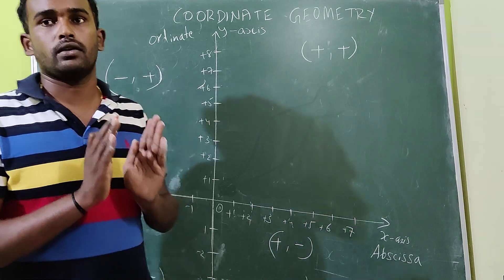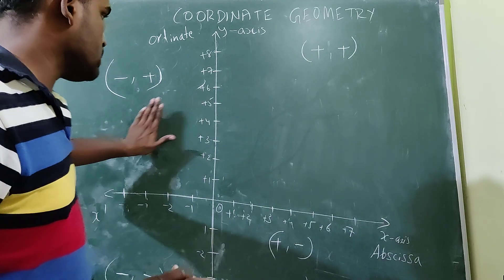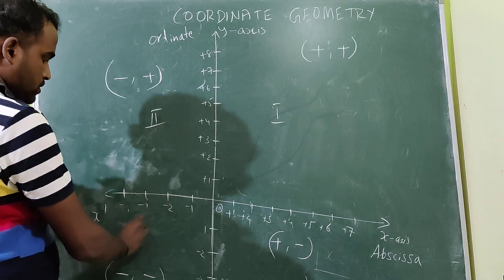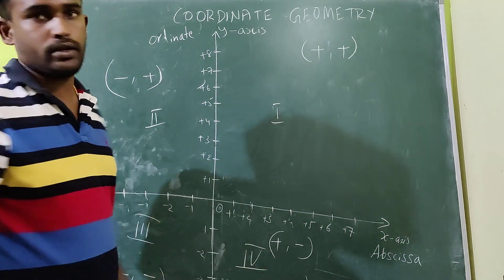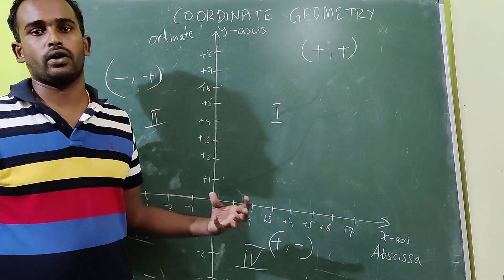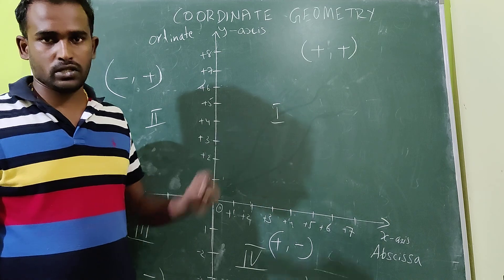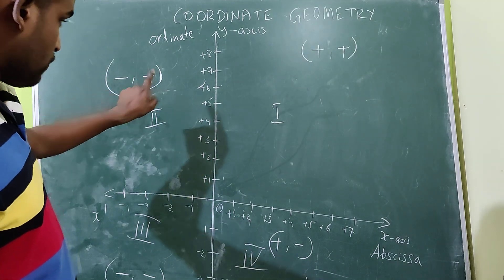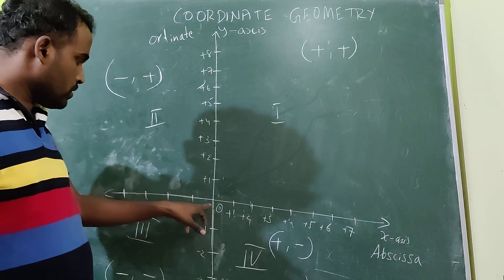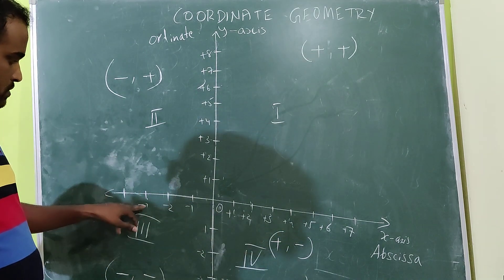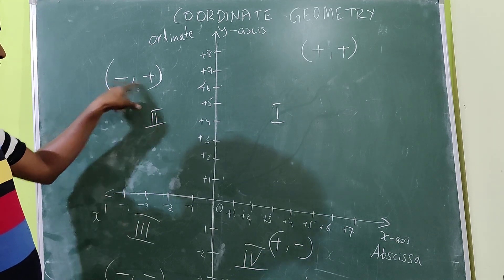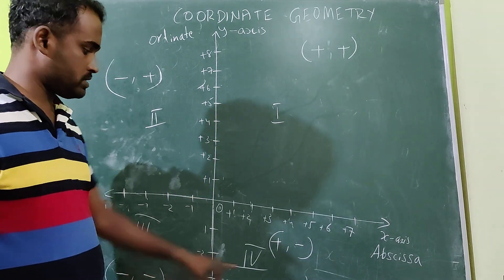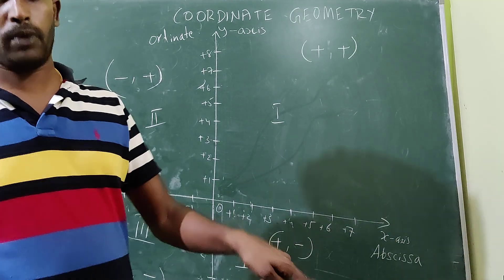You can divide the graph into four different parts: first quadrant, second quadrant, third quadrant, and fourth quadrant. In the first quadrant, values are always plus, plus. Second quadrant: minus, plus. Why minus? Because we always write the x-value first, and on the left side of the axis the values are minus 1, minus 2, minus 3 — always minus. Then y is plus. Third quadrant: x is minus, y is also minus — minus, minus. Fourth quadrant: plus, minus.